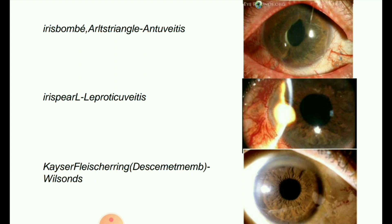Next image: iris bombé. Iris bombé is a condition in which there is apposition of the iris to the lens or anterior vitreous, which prevents aqueous from flowing from the posterior to the anterior chamber. The pressure in the posterior chamber rises, resulting in anterior bowing of the peripheral iris and obstruction of the trabecular meshwork.